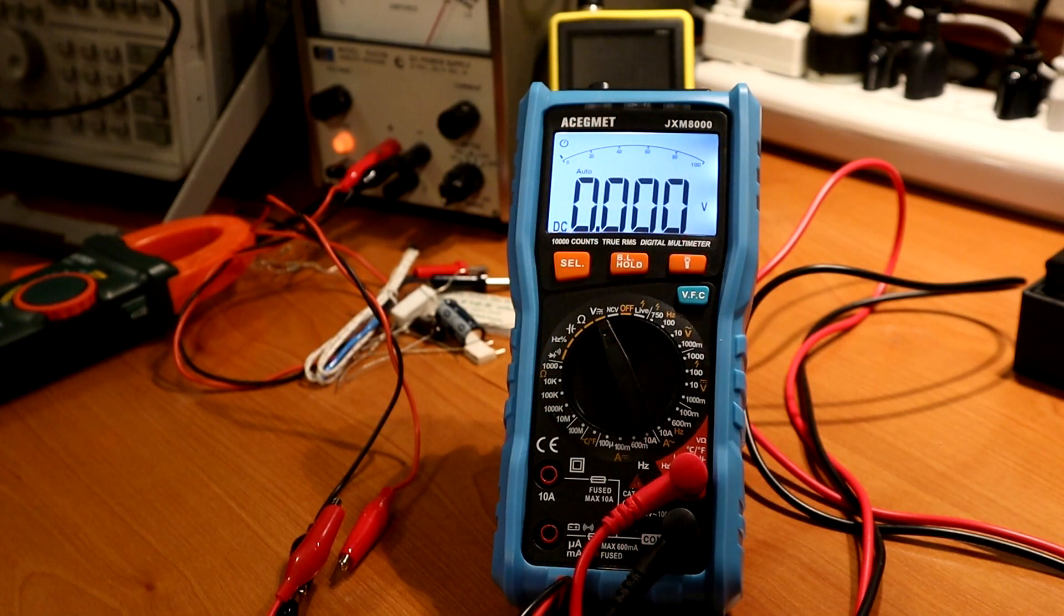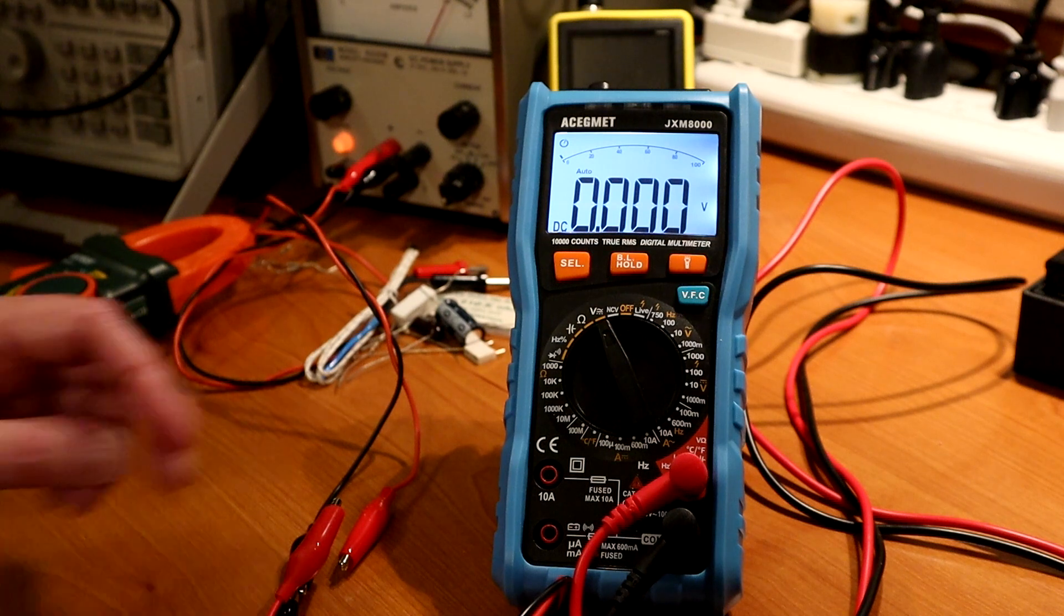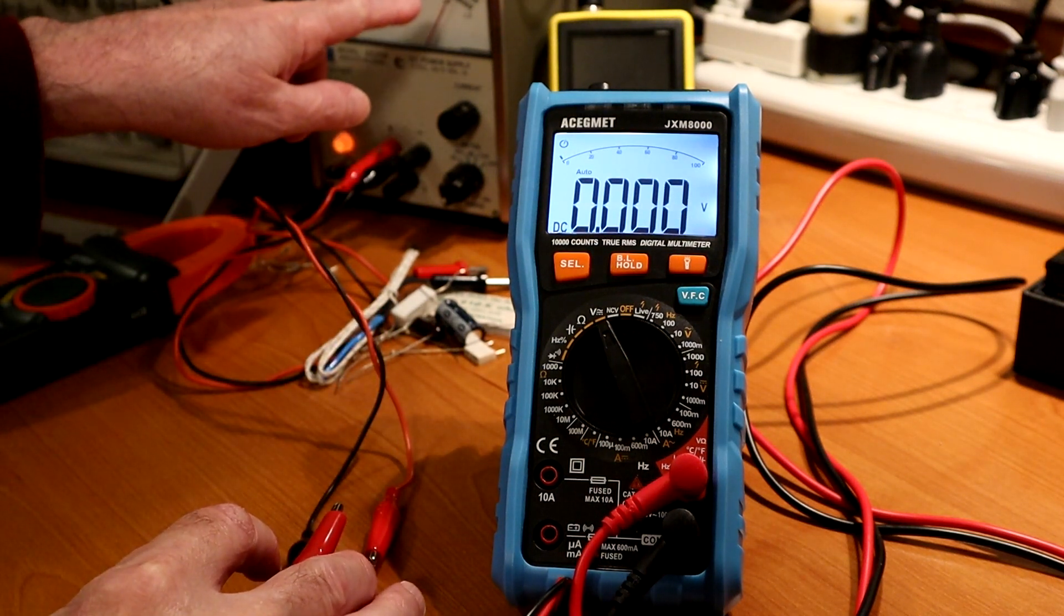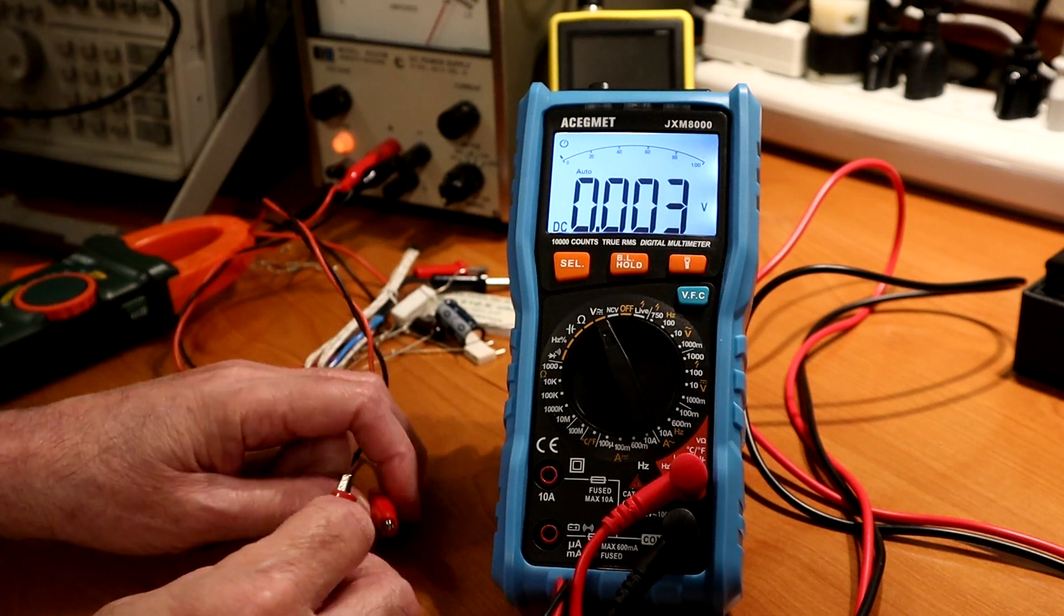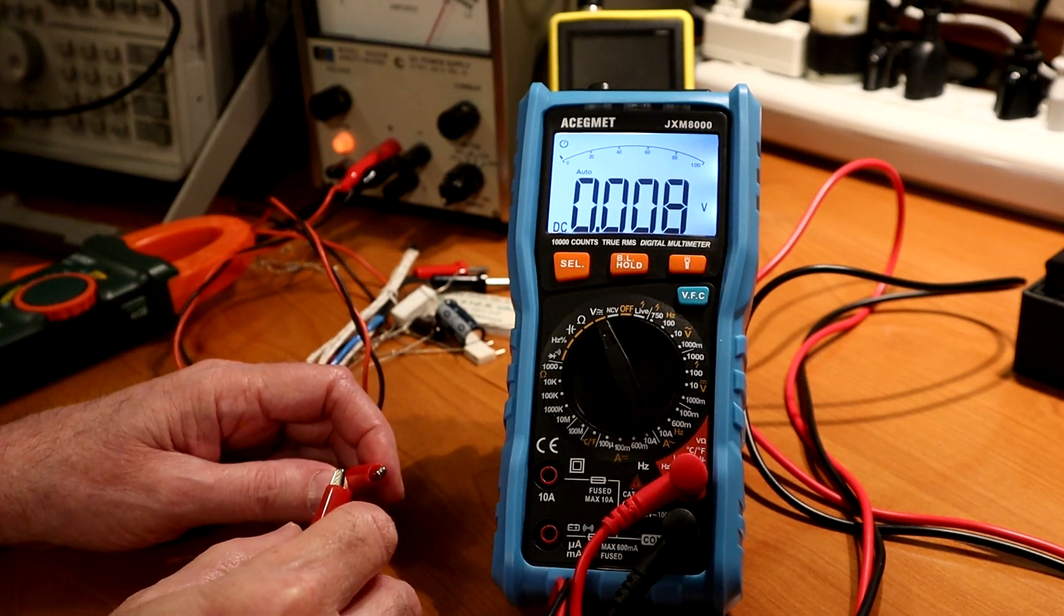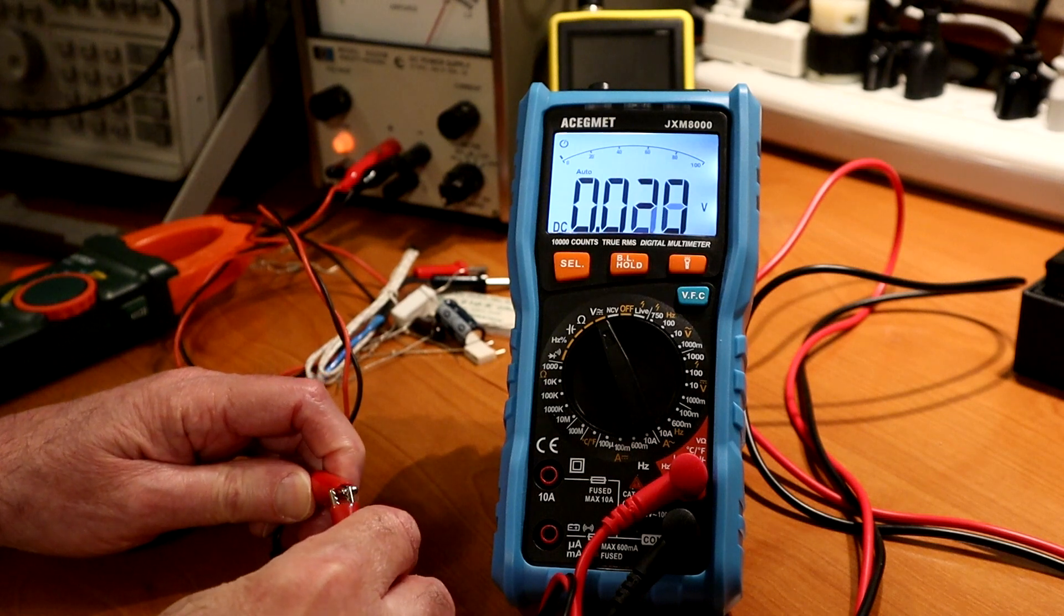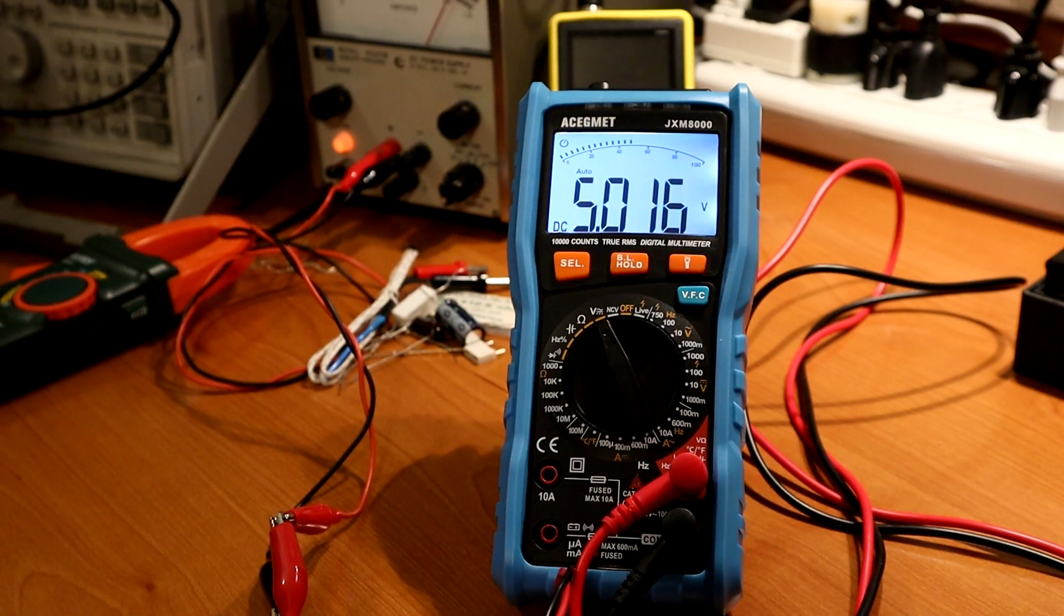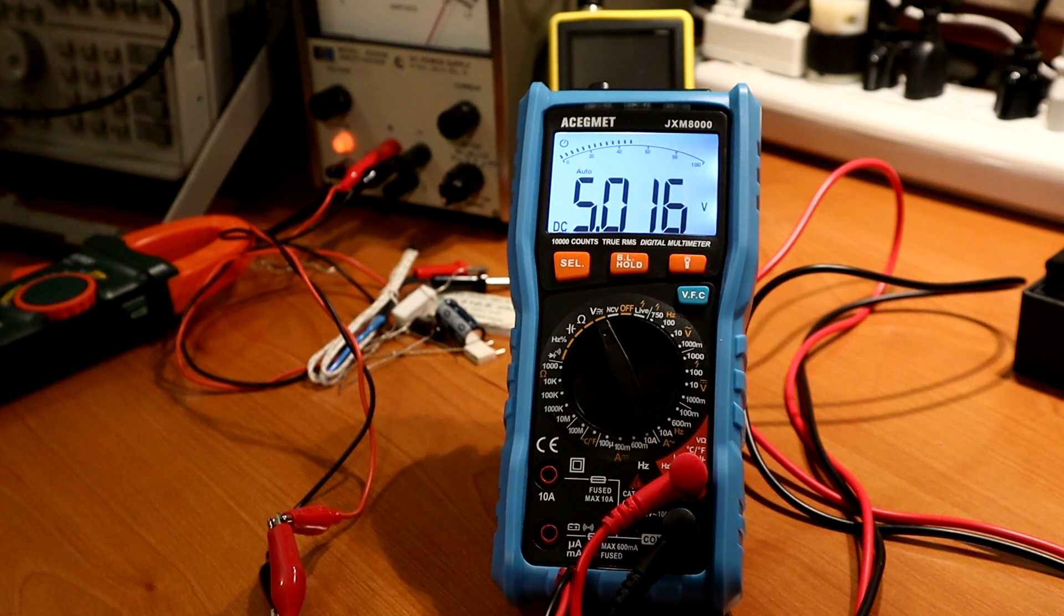So speed of response is often pretty important. Right now I have my power supply set up to put out five volts, and I'm going to hook up the meter, and you can see how quickly it responds. Three, two, one, now. So it took about one second or so, and that's in the auto mode.